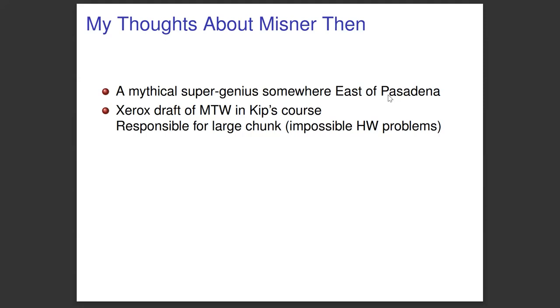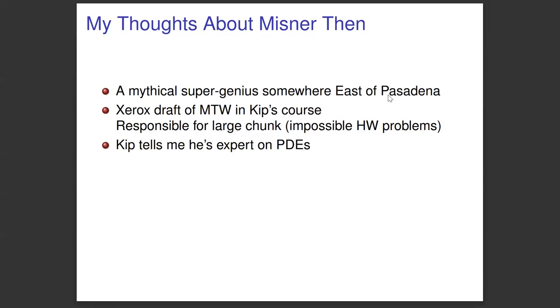So just to give you an idea of what my thoughts were about Charlie at that time, he was this mythical super genius somewhere in the East, because the way that we knew about him was, first of all, from these papers that had sort of set the research direction for us. But also we had, and Kip was teaching the relativity course out of the Xerox draft of Misner, Thorne and Wheeler. Now, if you think the book is big in printed version, can you imagine what a Xerox would look like? And there are a lot of homework problems in this book, and some of them are very difficult, and we knew those were Kips. But there were some impossible problems, and we ascribed them all to, it must be Misner.